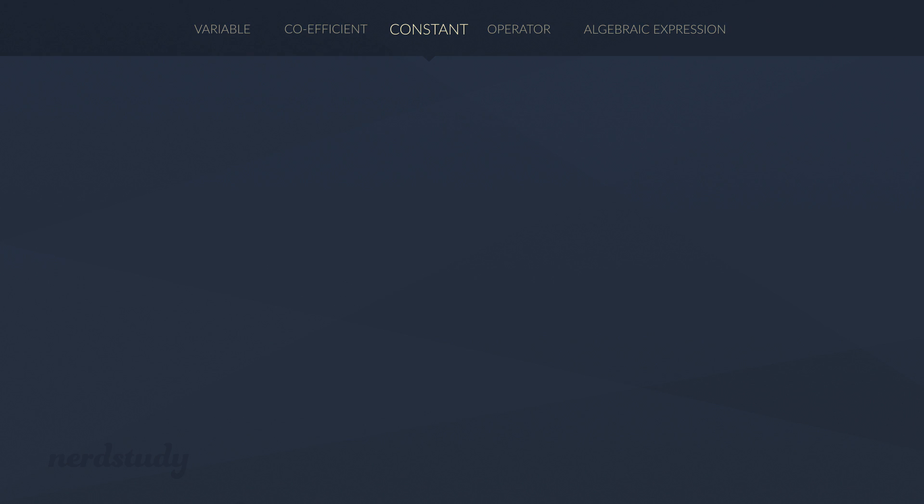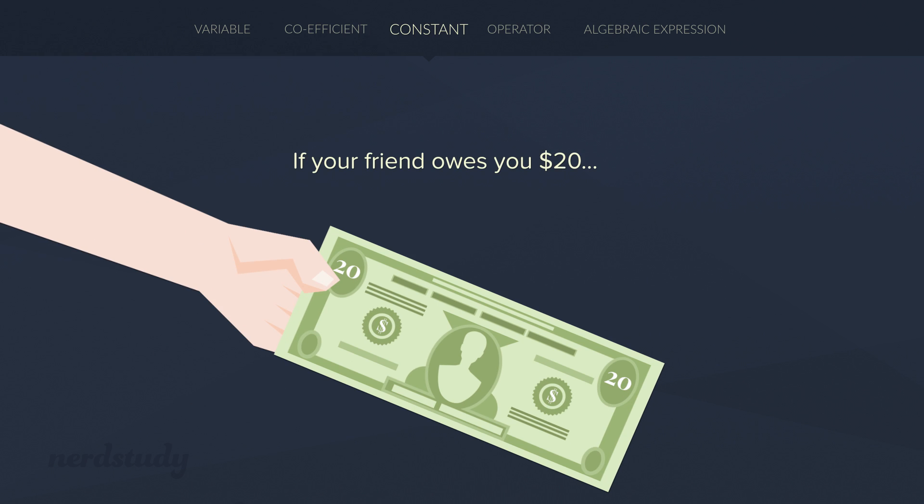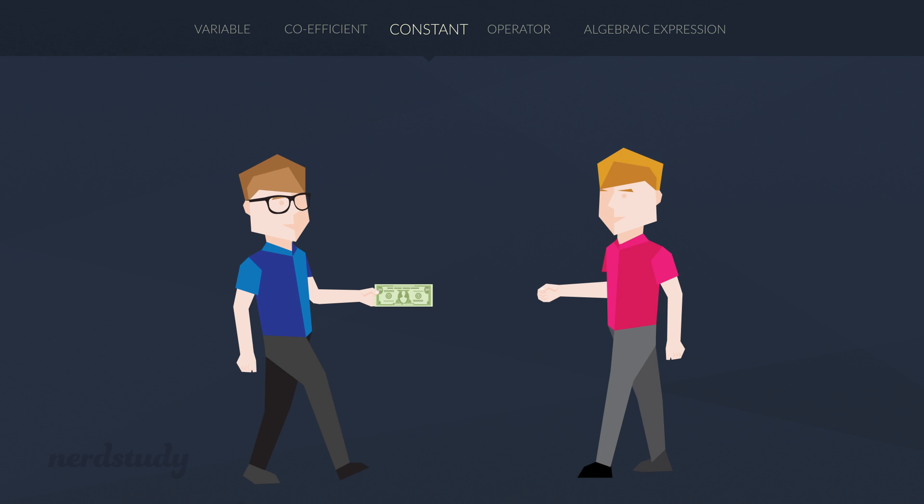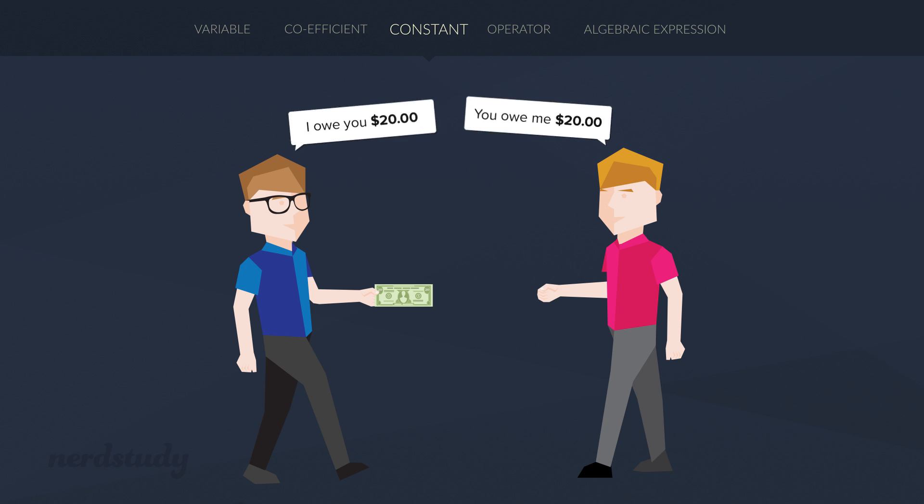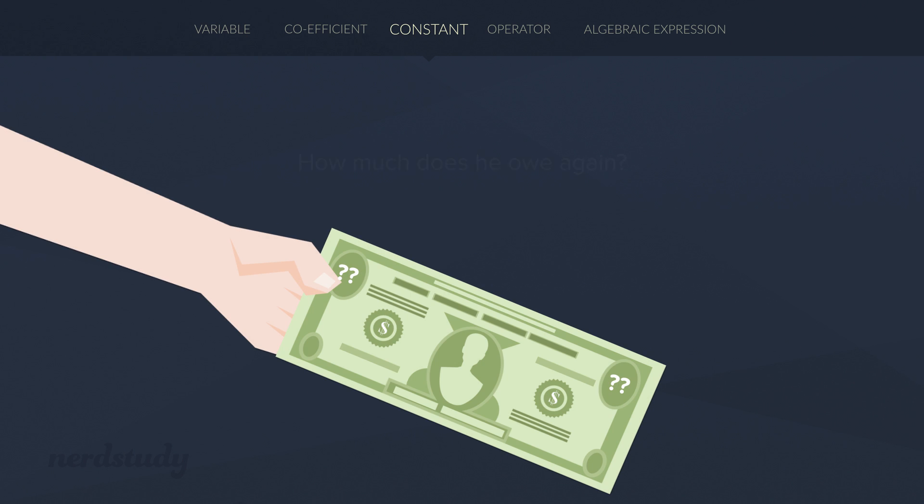For example, if your friend owes you $20, he literally owes you exactly $20. You know the amount that he owes you and it won't change. But when we're dealing with an amount that we don't know, that's when we use a variable. And of course, the value can then vary.